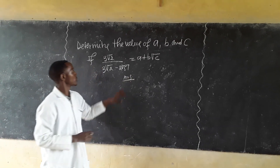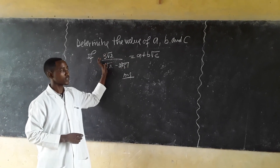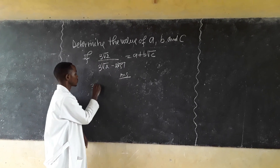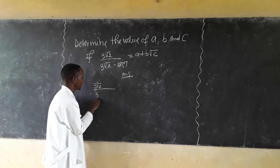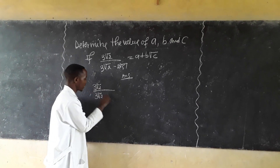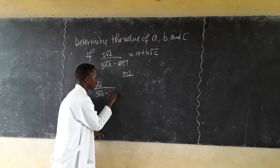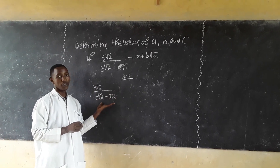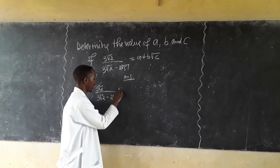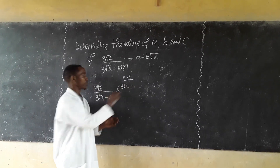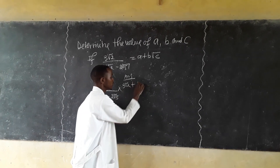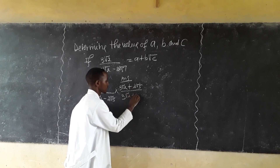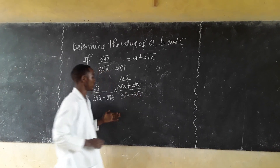We solve this by rationalizing the left side. We take 3√2 divided by (3√2 minus 2√5) and multiply by the conjugate of the denominator: (3√2 plus 2√5) divided by (3√2 plus 2√5).